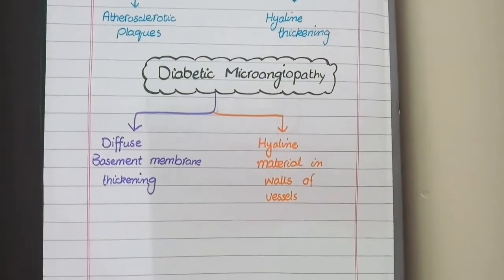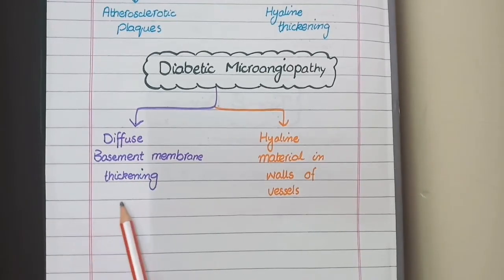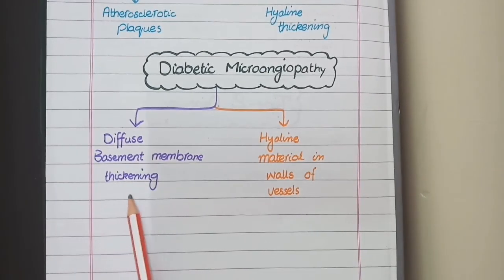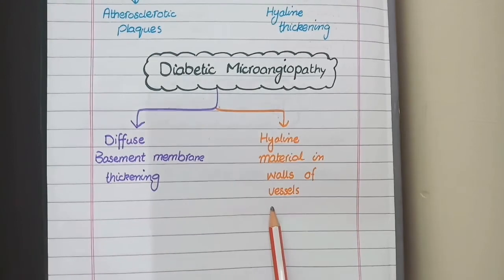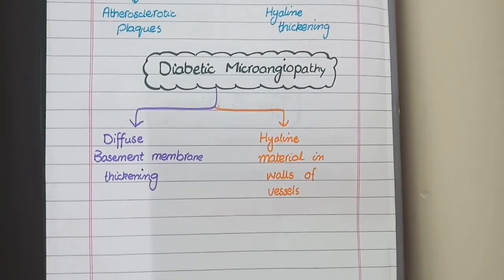Diabetic microangiopathy, which is a lesion of capillaries, is also of two types: first, diffuse basement membrane thickening, and second, deposition of hyaline material in the walls of vessels, which is due to the leakage of proteins.